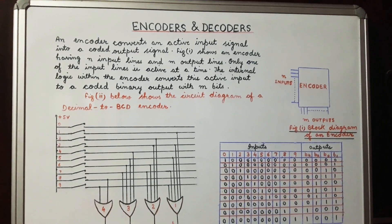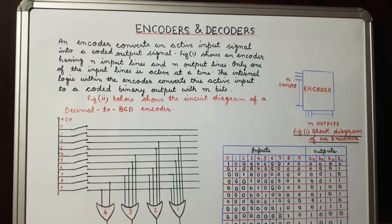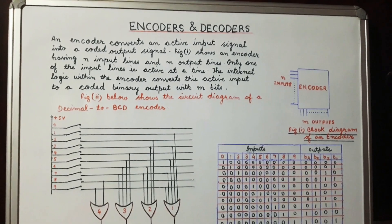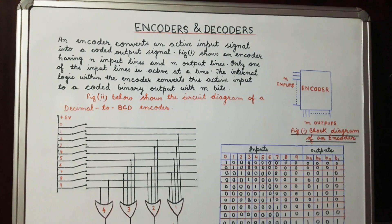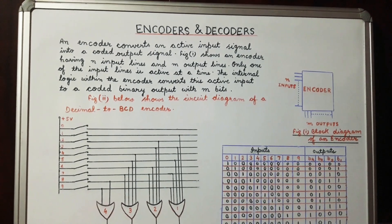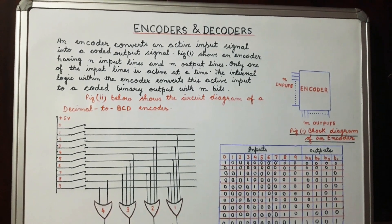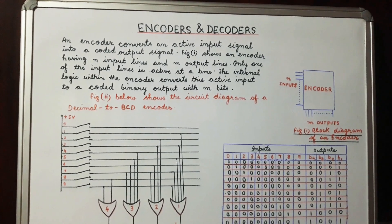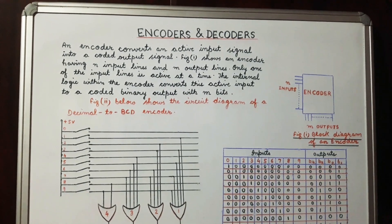Welcome everyone. In this video we will discuss encoders and decoders. An encoder is a combinational circuit which converts an active input signal into a coded output signal. The block diagram of an encoder is shown in figure 1. From this figure we find that an encoder has n number of input lines and m number of output lines.